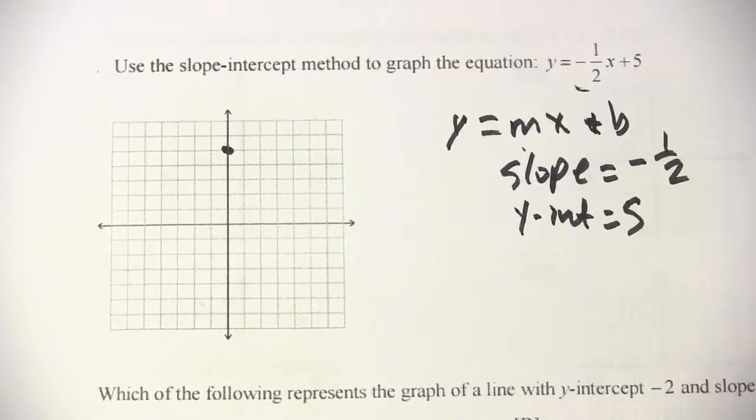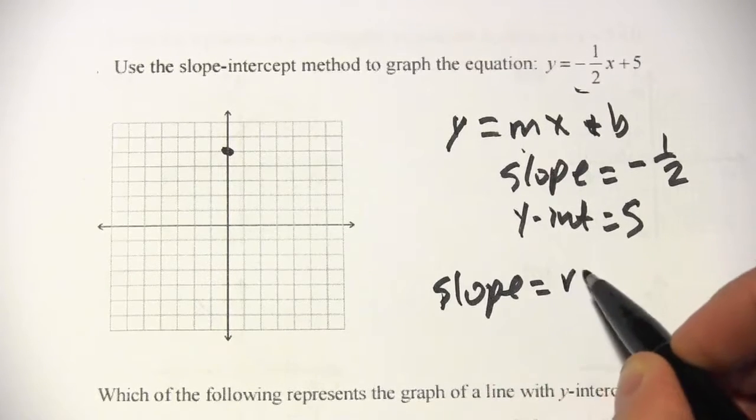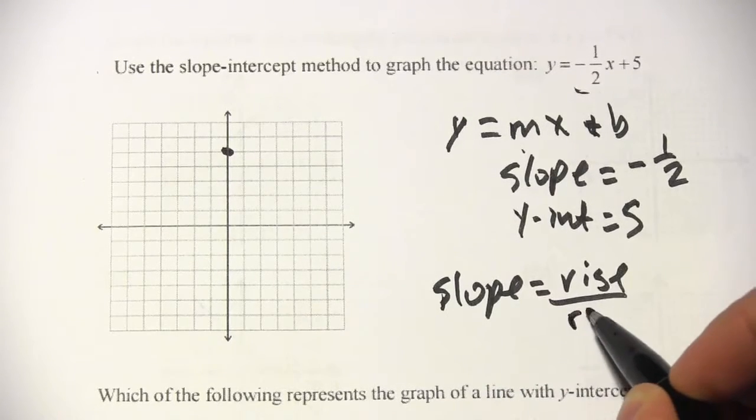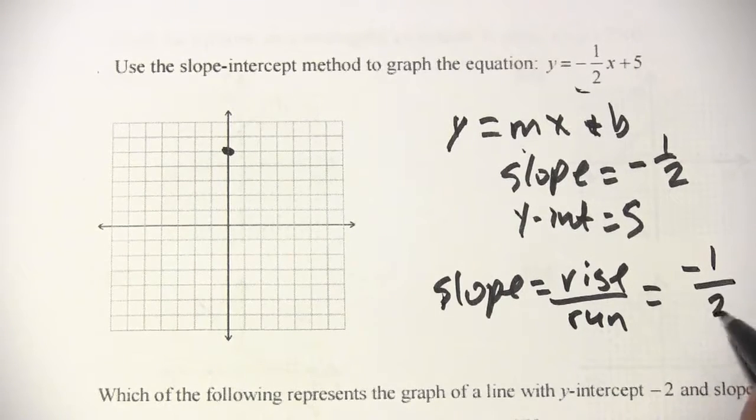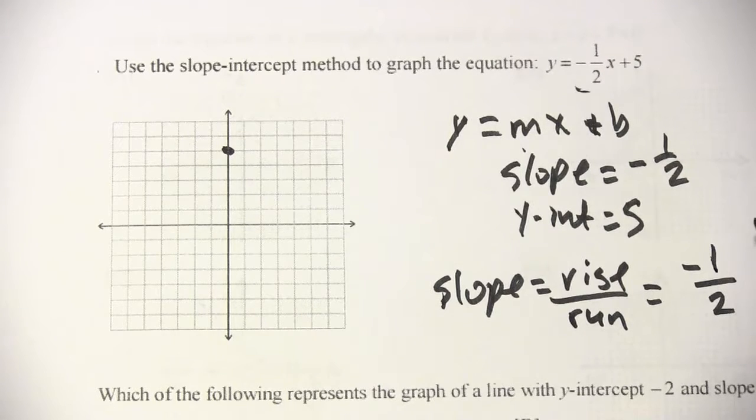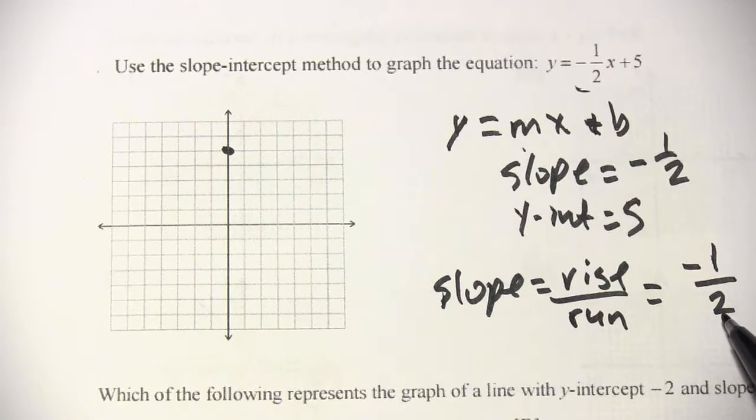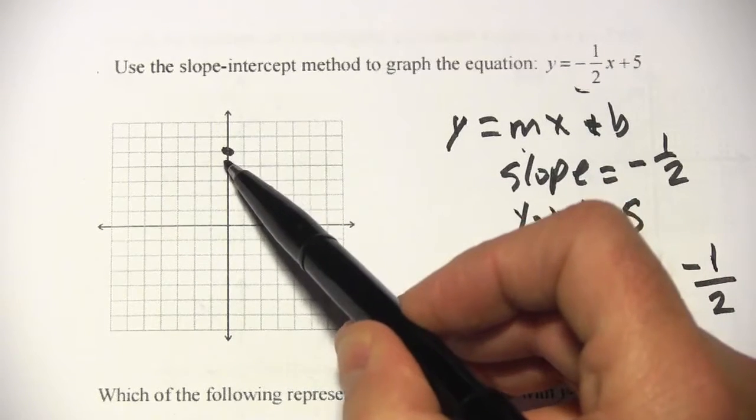Now the slope is rise over run. And we have a negative one-half, so I'm going to write that as negative 1 over 2. So our rise is negative 1, that means it's going to go down 1, and our run is 2. So for every 1 that it goes down, it goes over to the right 2.